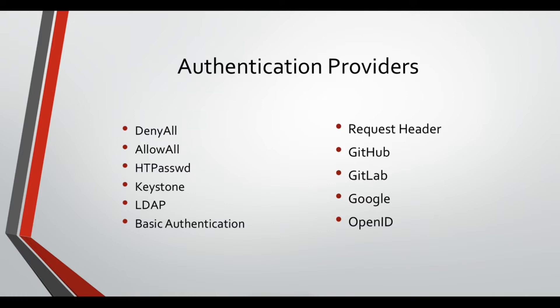You have the LDAP, which is in my opinion the most common option for any enterprise. You usually have your Active Directory or other sort of LDAP server in your enterprise and you want to attach your environment to this directory server and let users authenticate with their own Windows accounts or something. This is what we'll be doing in this lecture - configuring an Active Directory on Amazon Cloud and using it as our LDAP provider for the OpenShift environment.